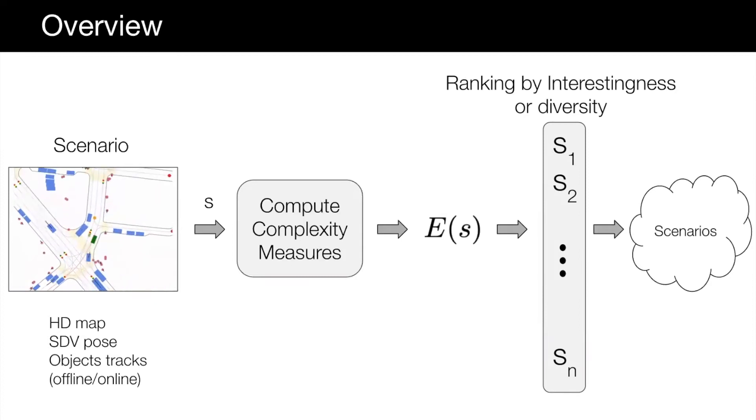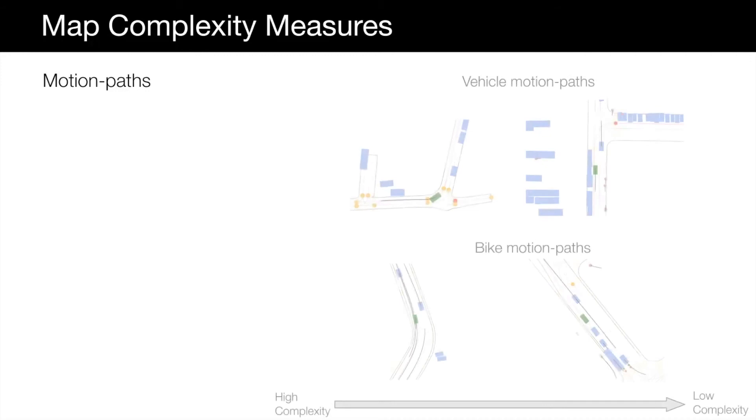Let's look at our proposed complexity measures. The first set of measures are related to the static part of the environment that indicate how the road users may behave in the scene. One important aspect of the map is the curviness of the motion paths for vehicle lanes as well as bike lanes. Here are some examples of lanes with sharp turns that yield high complexity motion paths for vehicles and bikes.